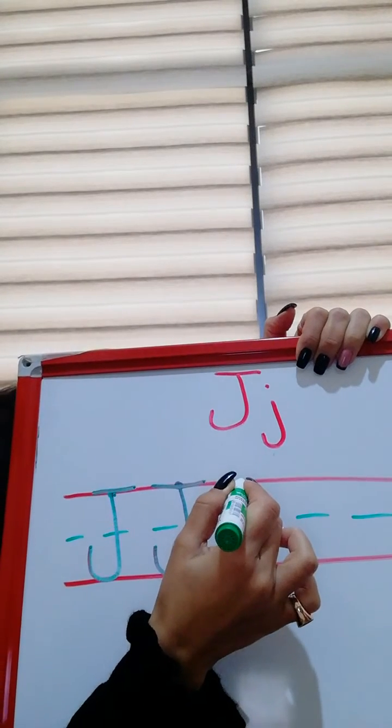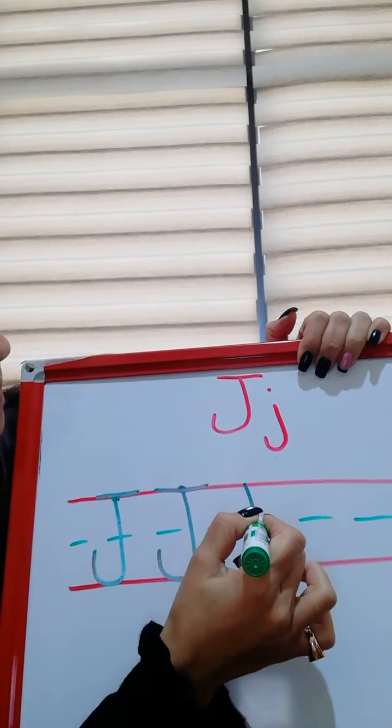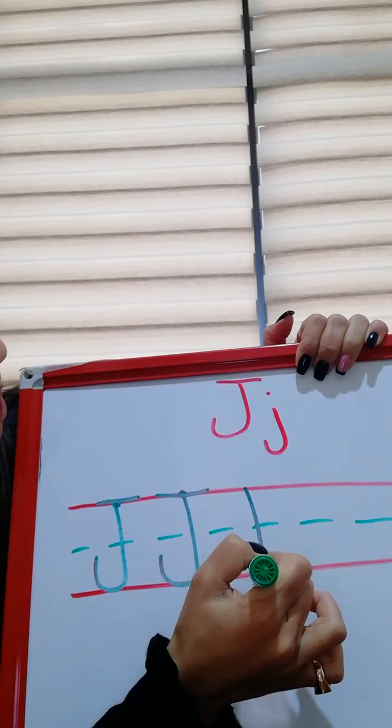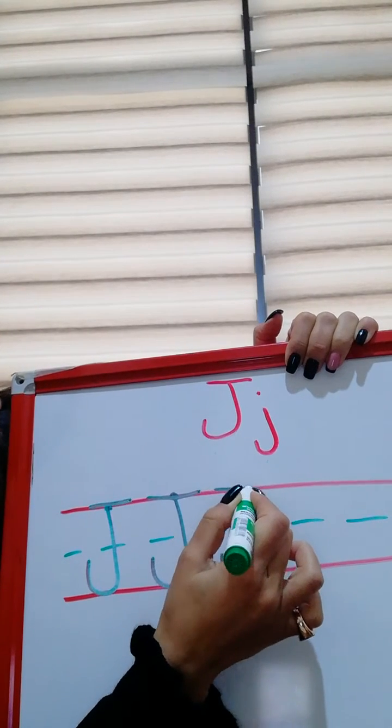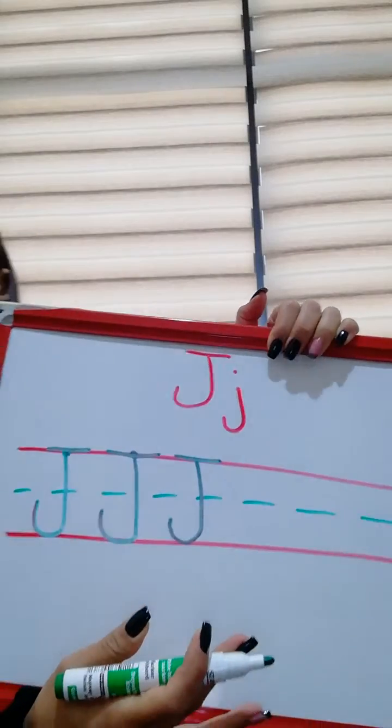One more time. So, you go down, straight, you turn to the left, you go back to the top, and go across. This is uppercase J.